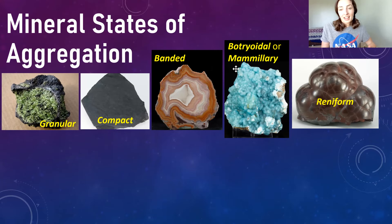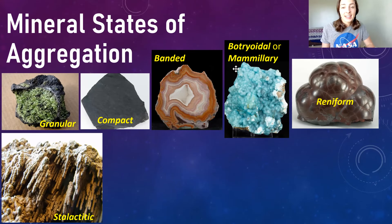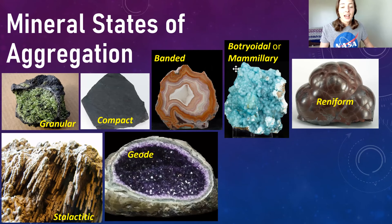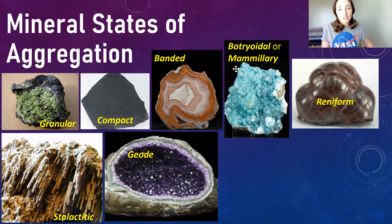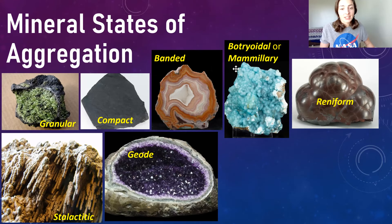Then we have reniform, in which the surface of the mineral aggregate resembles that of a kidney — the example shown here is hematite. Then we have stalactitic, where the mineral resembles stalactites, with the example of limonite. Then we have geodes — that state of aggregation is simply when the mineral is within a geode. Quartz is typically found inside geodes, and specifically the purple variety called amethyst is very common inside geodes.